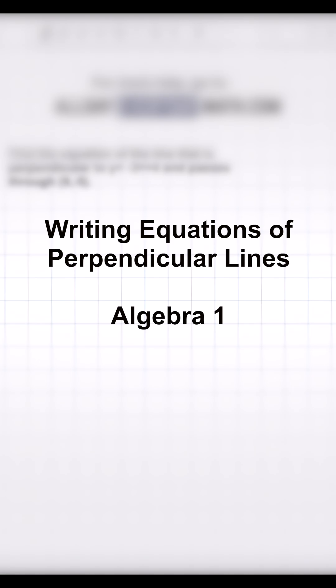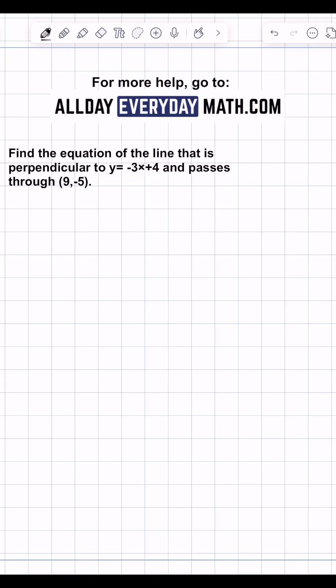This is how you find the equation of a perpendicular line in Algebra 1. Find the equation of the line that is perpendicular to y equals negative 3x plus 4 and passes through 9, negative 5.